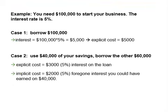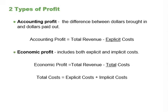Let's take a look at a numerical example. Assume that you need $100,000 to start your business and the interest rate is 5%. If you borrow $100,000, then the interest is $100,000 times 5% equals $5,000 — an explicit cost paid to the bank. But if you use $40,000 of your savings and borrow the other $60,000, then the explicit cost is only $3,000 (5% times $60,000). The implicit cost is $2,000, which is the foregone interest you could have earned on your $40,000 in savings.